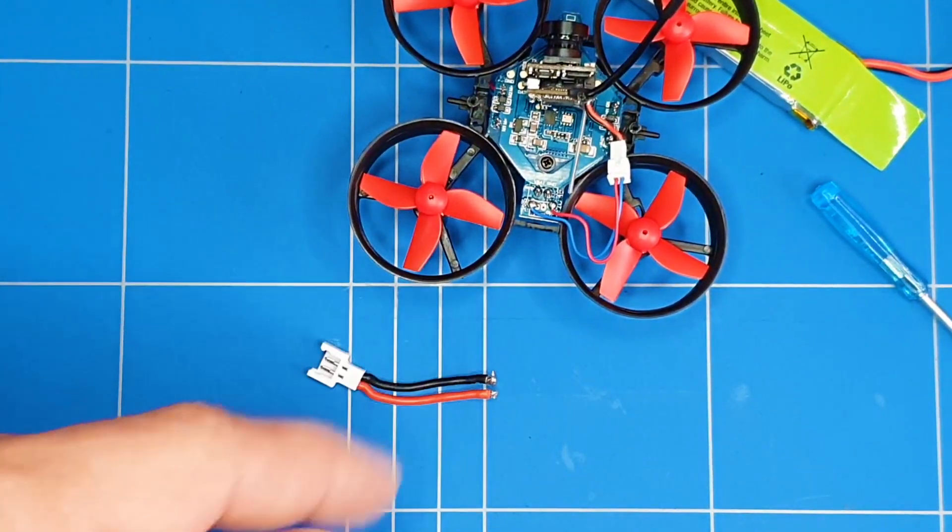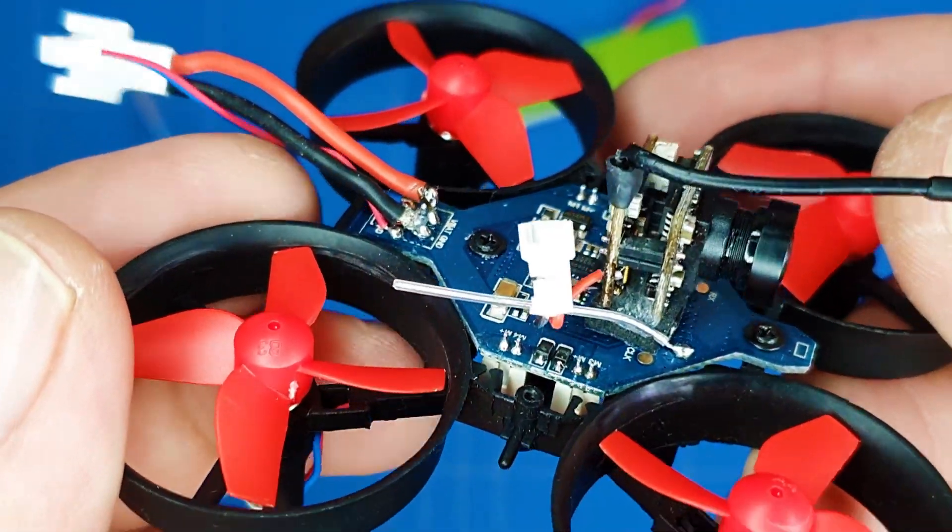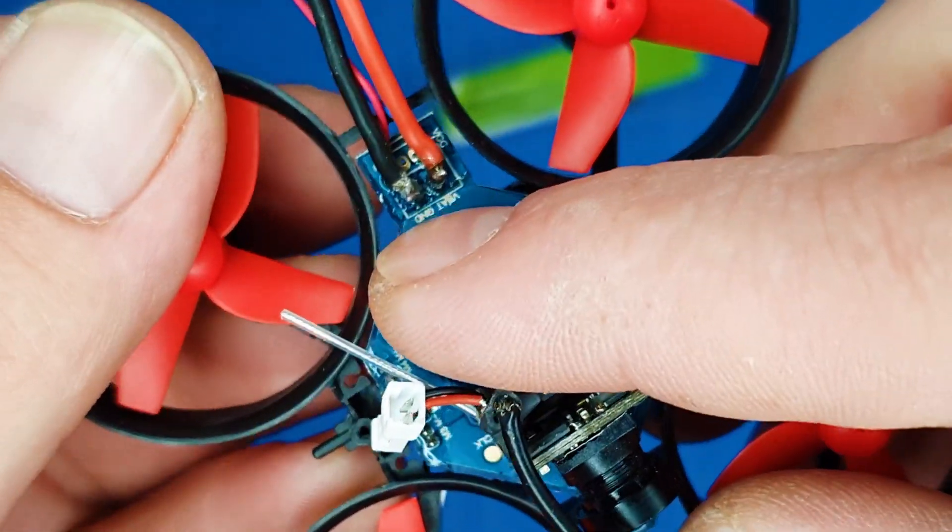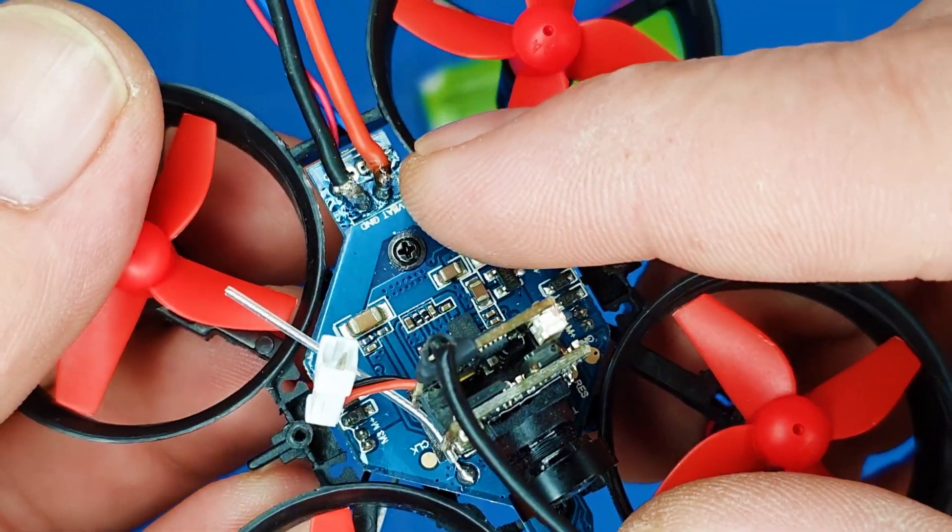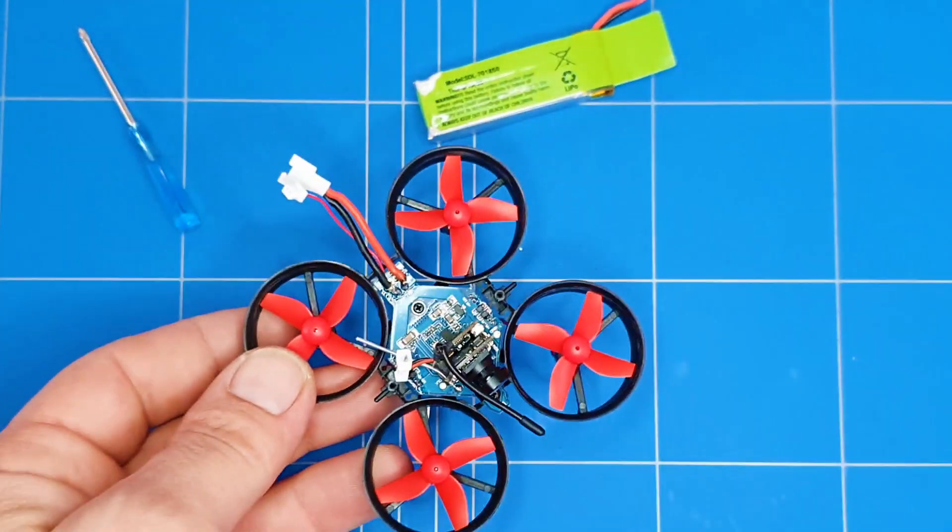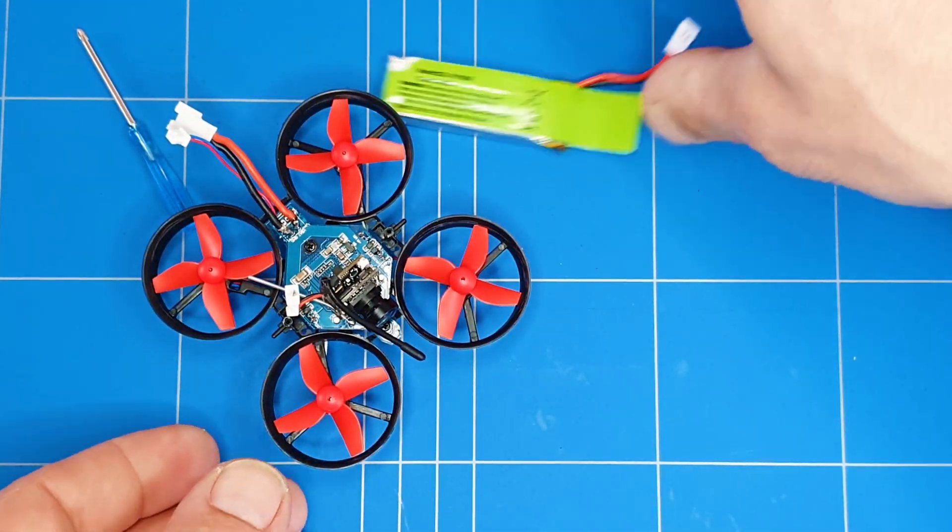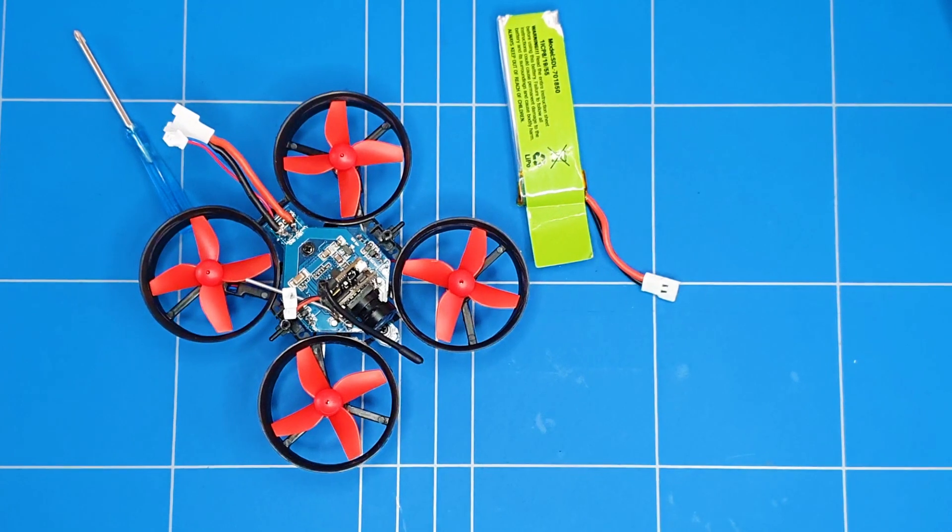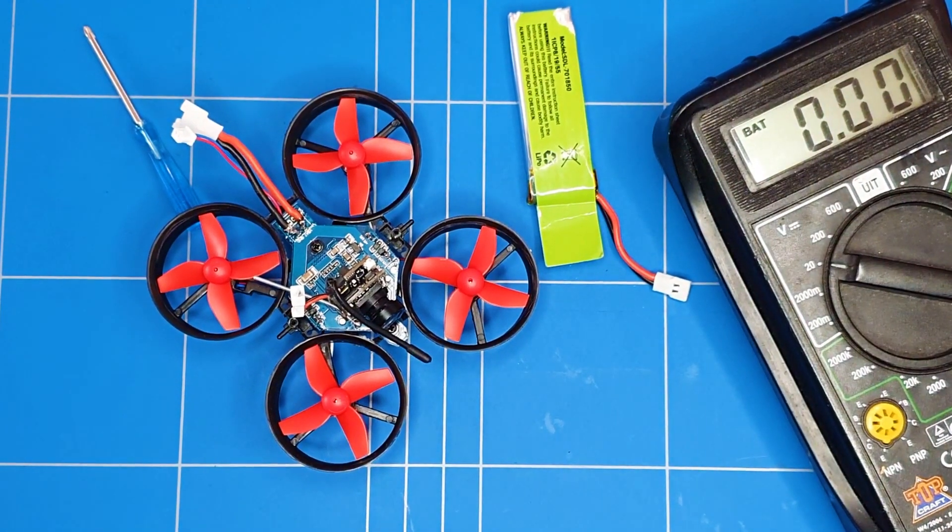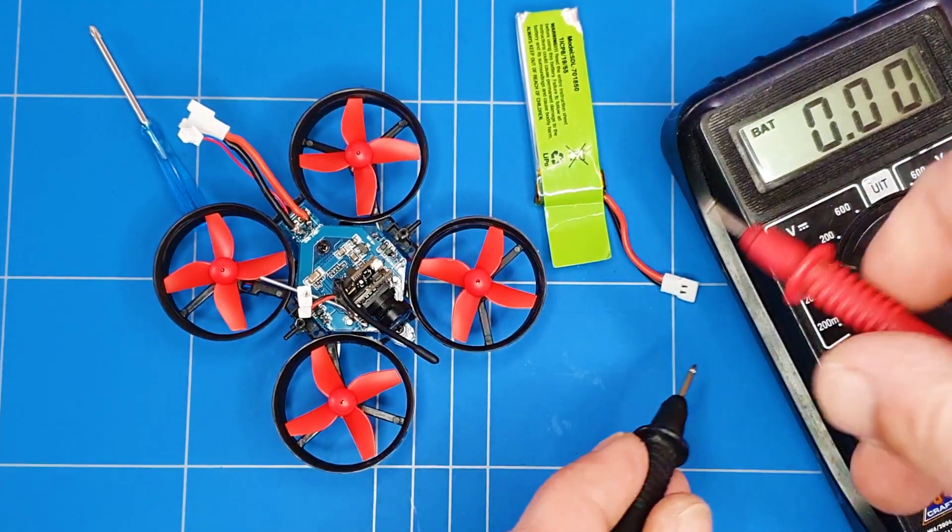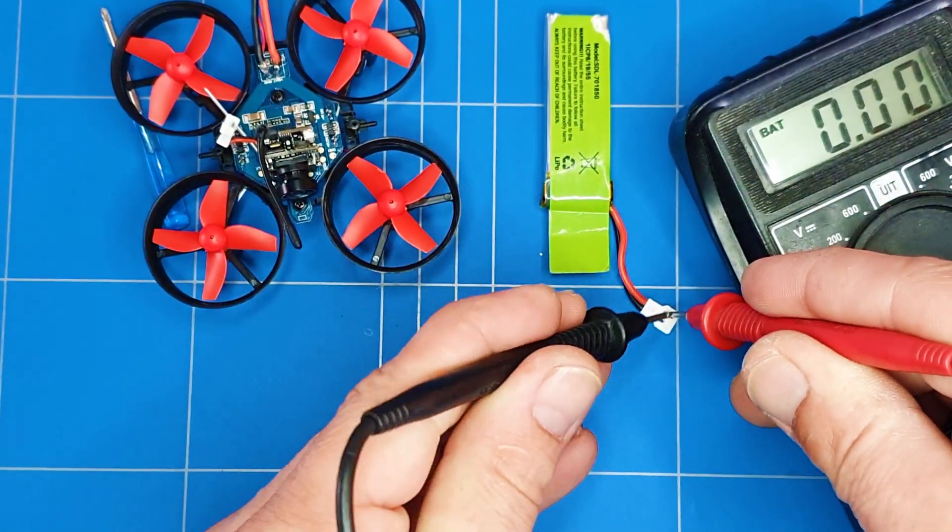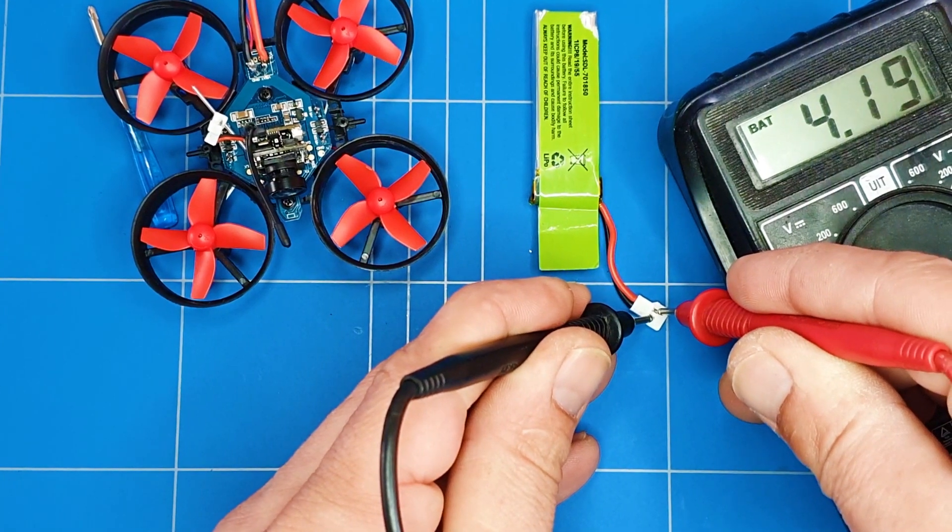And solder it. We just solder it right directly to the connector. The original connector is there. This is negative, that's positive. We've tested that with the voltage meter and we did the same thing for the battery of course, to make sure positive is positive, negative is negative.